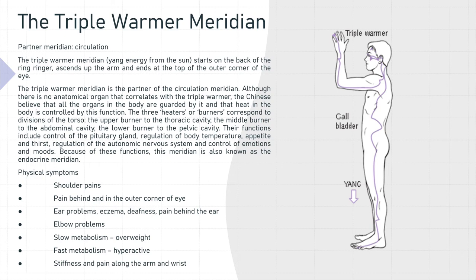The physical symptoms associated with triple warmer meridian imbalance are shoulder pains, pain behind and in the outer corner of the eye, ear problems, eczema, deafness, pain behind the ear, elbow problems, slow metabolism which leads to being overweight, a fast metabolism which leads to being hyperactive, and stiffness or pain along the arm and the wrist.